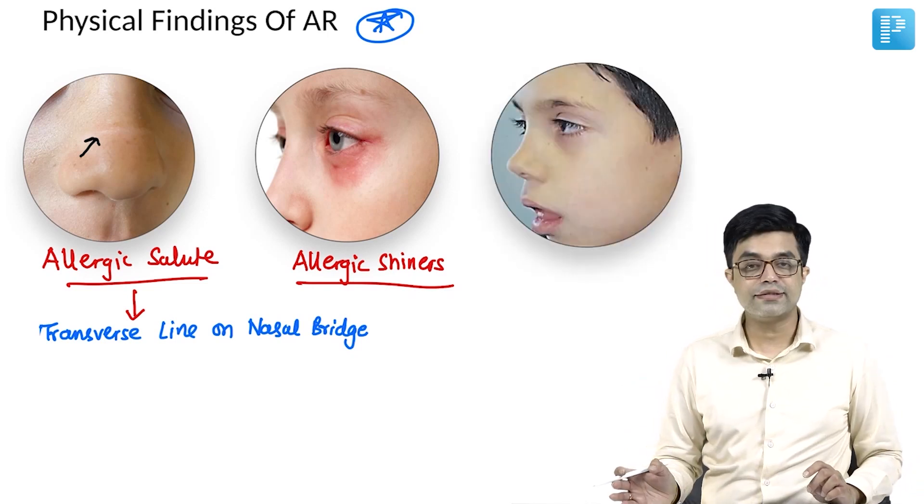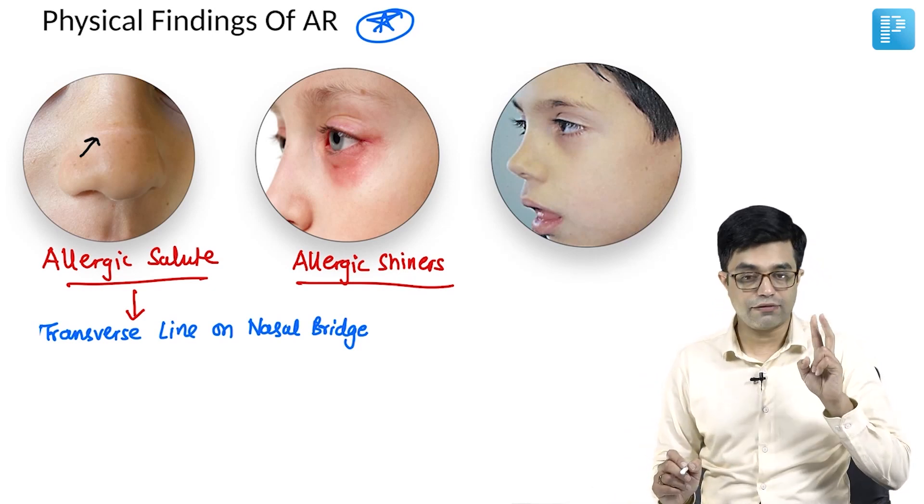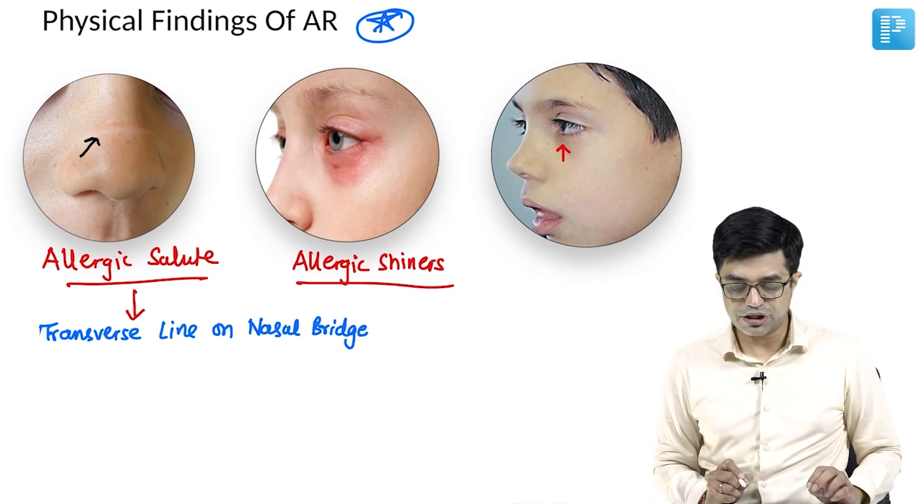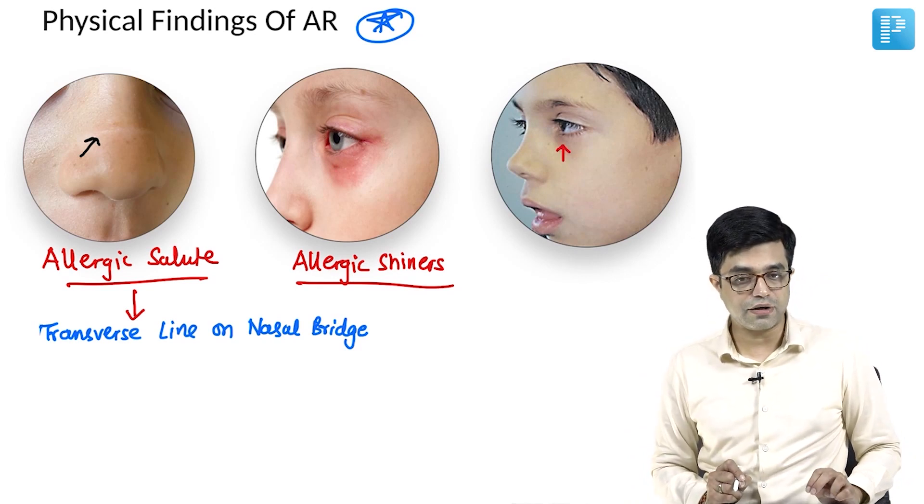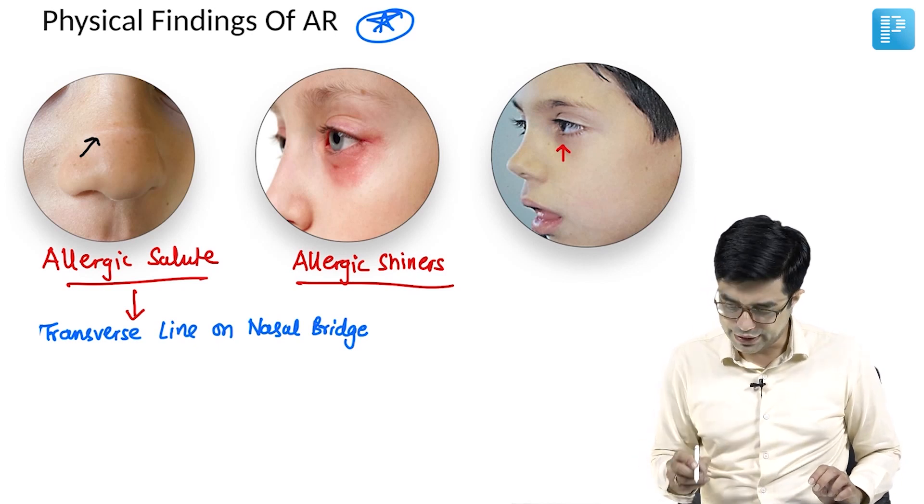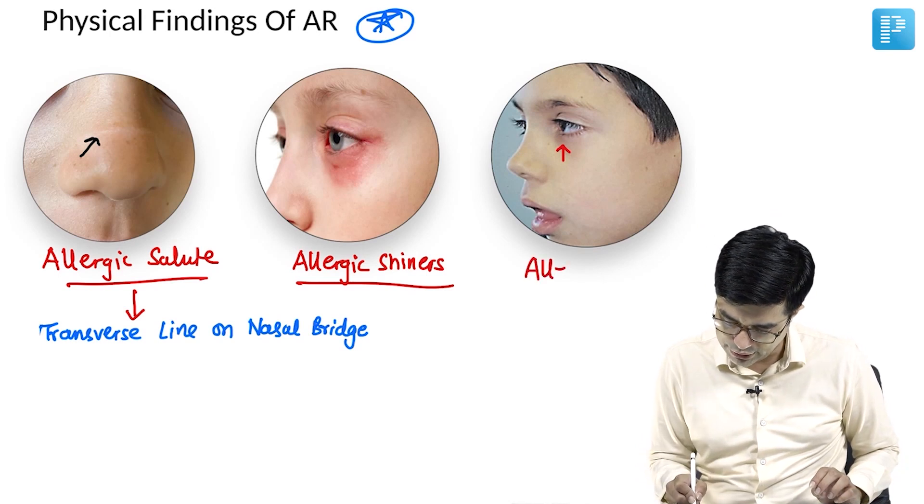And the third physical finding is this. Look at this child. This child is showing two physical findings. One is the presence of, can you see that there is some degree of allergic shiners which is present in this child around the eyes. Secondly, look at the mouth of this child. You will find that these children have a condition called as allergic gape.